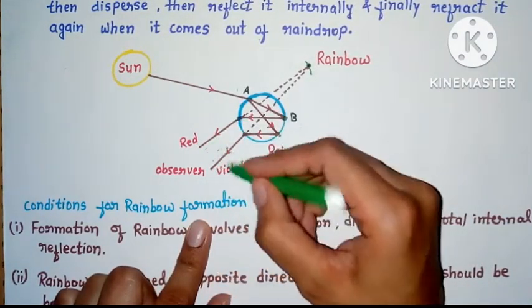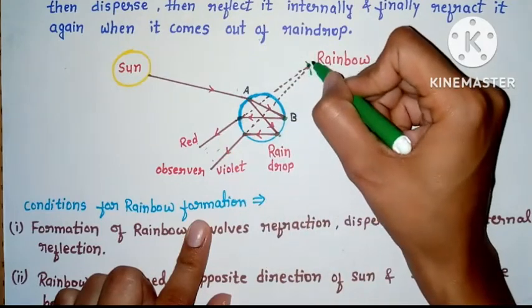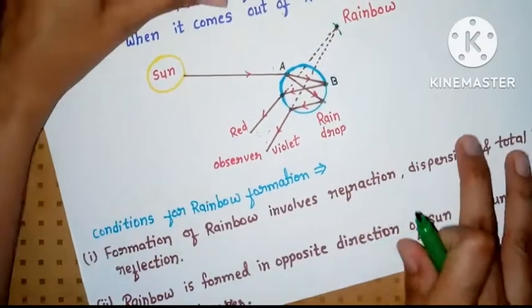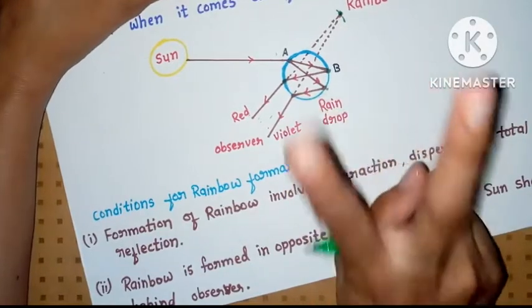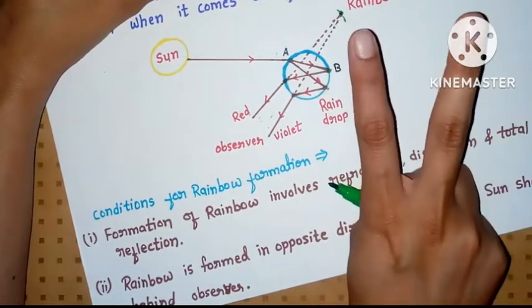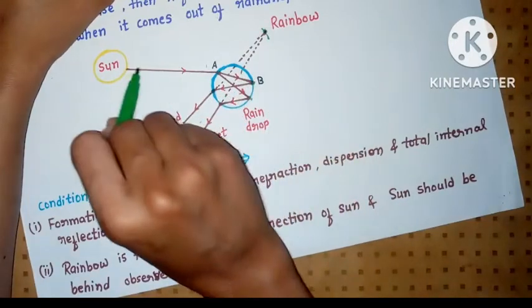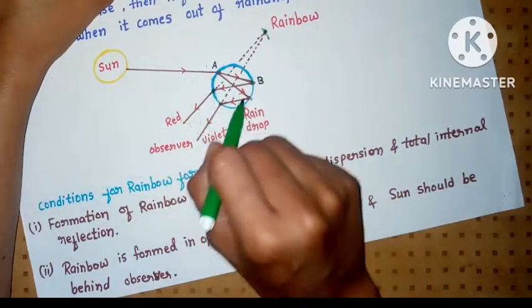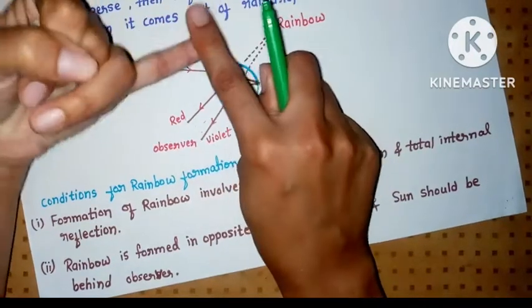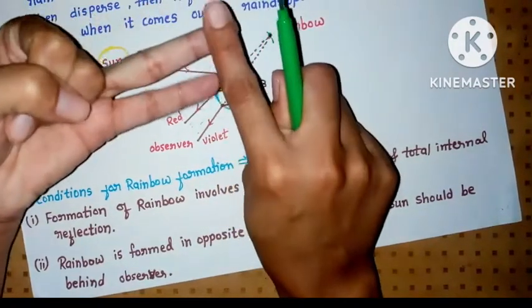So mainly there are two conditions for rainbow formation. Rainbow forms when sun rays enter the drop and firstly disperse, then undergo total internal reflection,